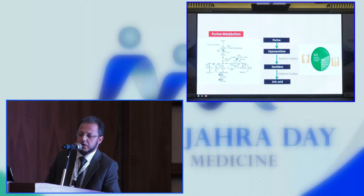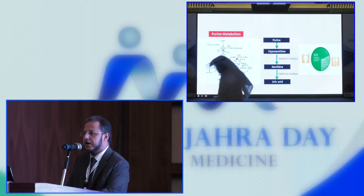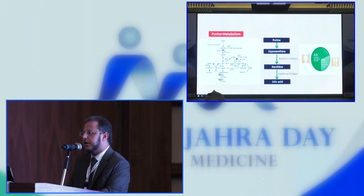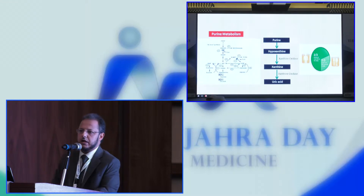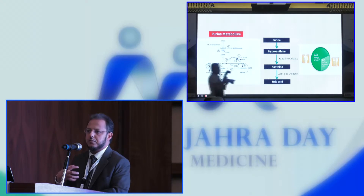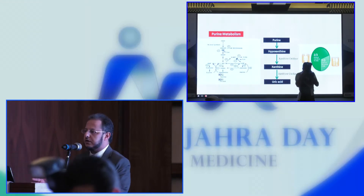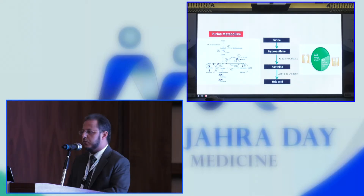As you know, purines are proteins — nitrogenous proteins involved in very complex biosynthetic processes in the body — with an end product of uric acid. It is believed that two-thirds of the uric acid produced in the body comes from these processes inside the body, and one-third comes from our diet. So our diet plays a role in just one-third of the uric acid level, and probably less than this.